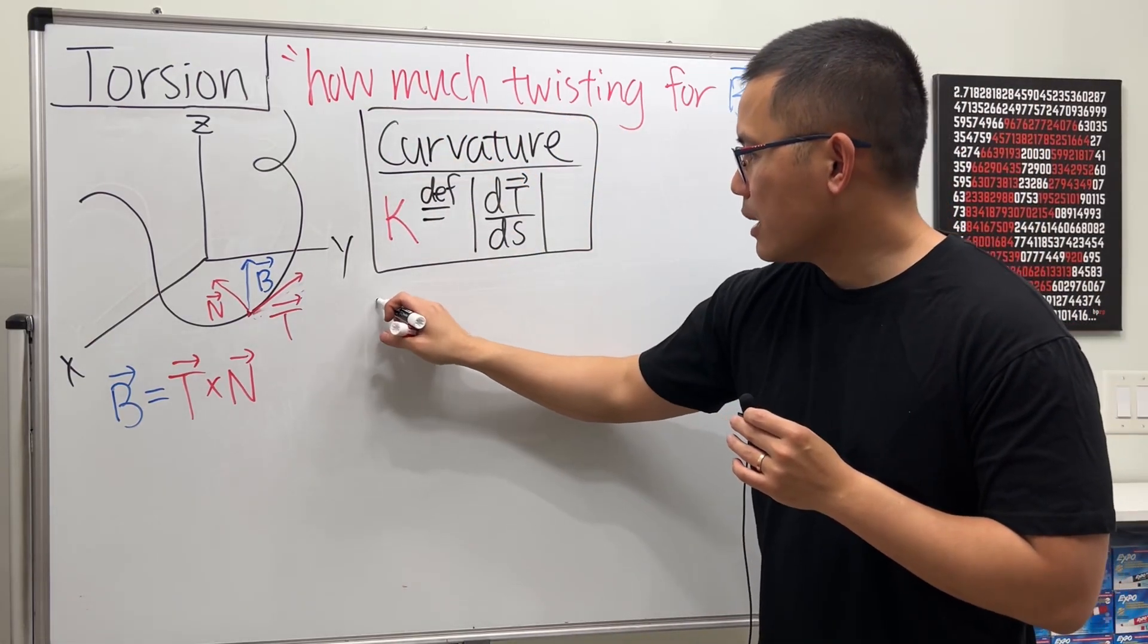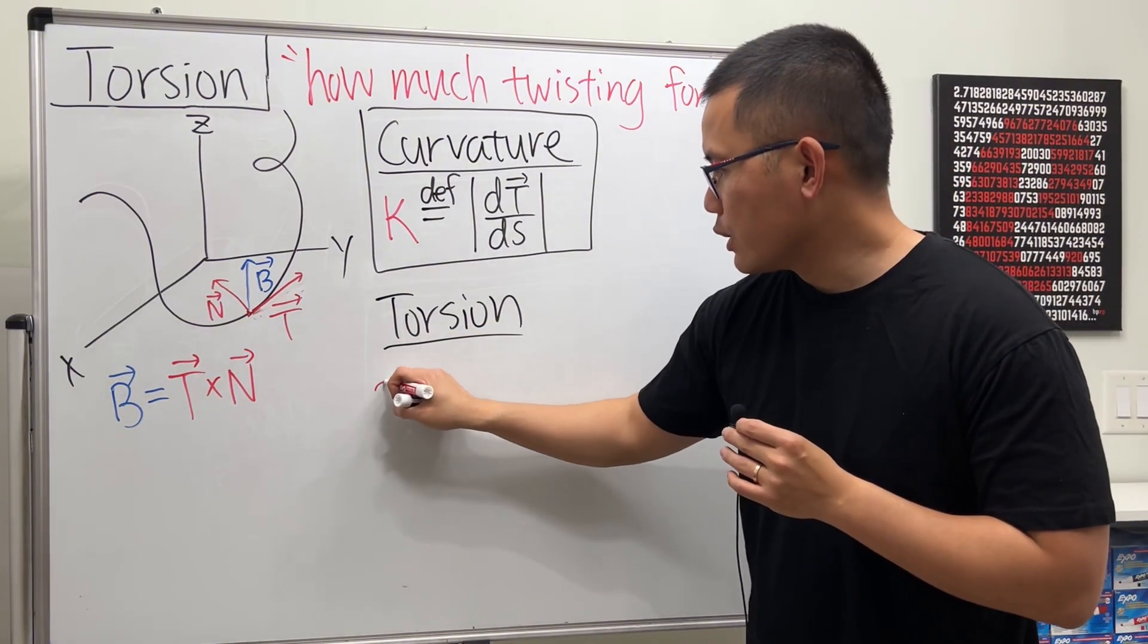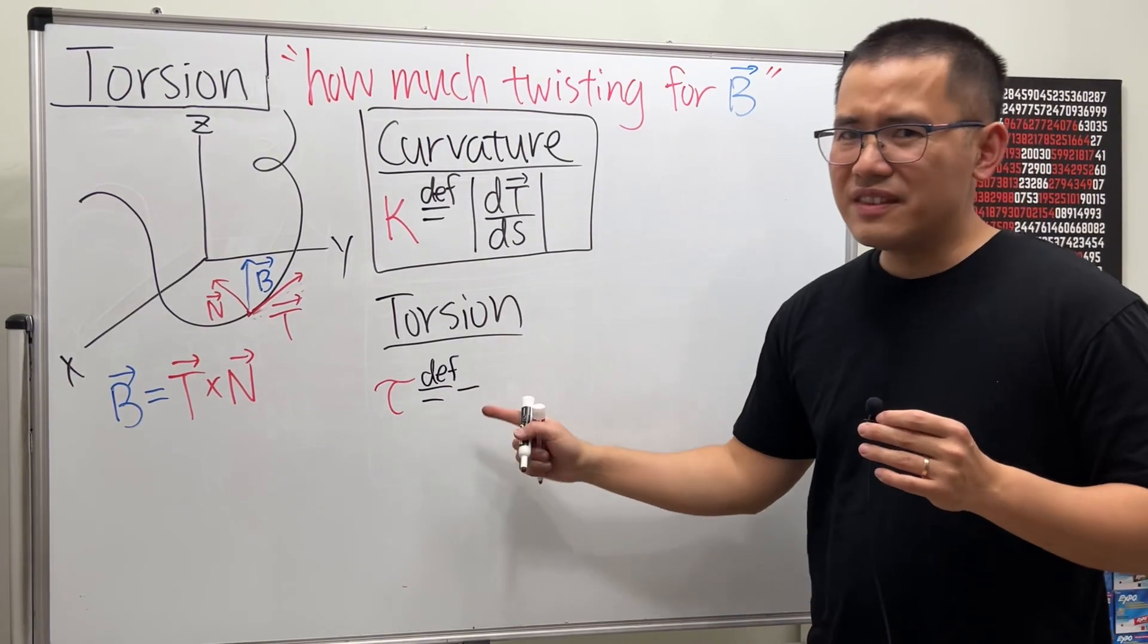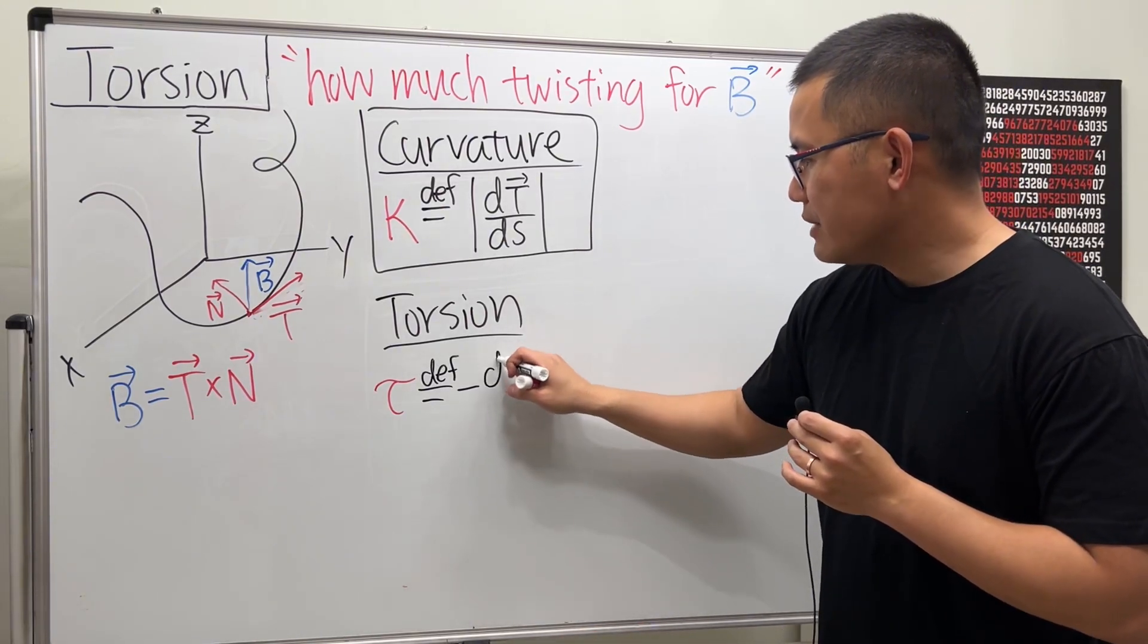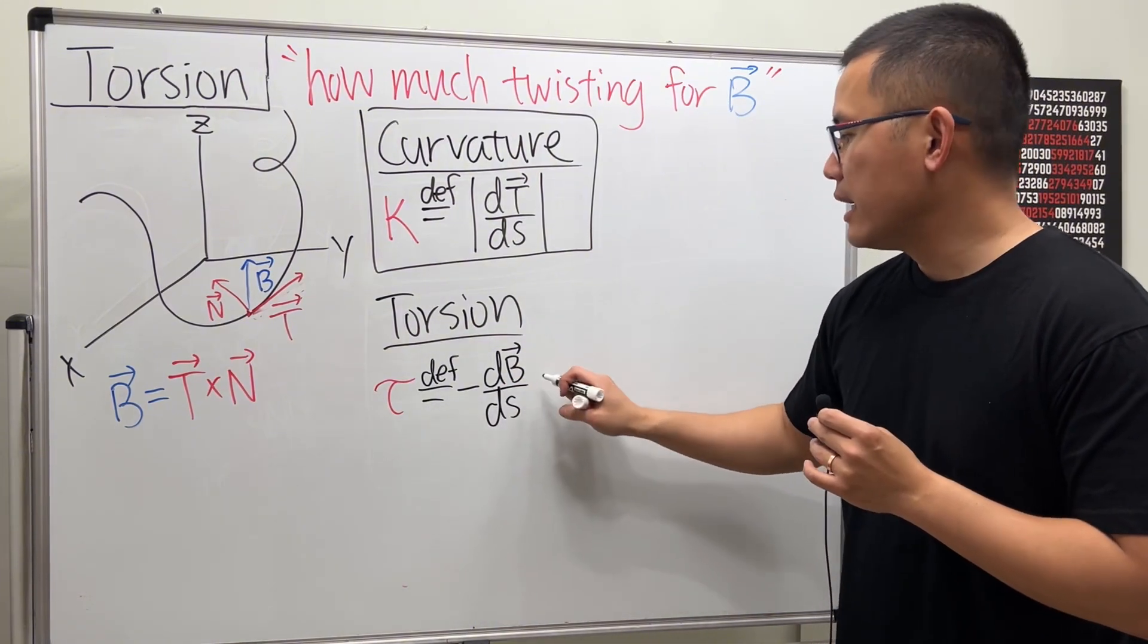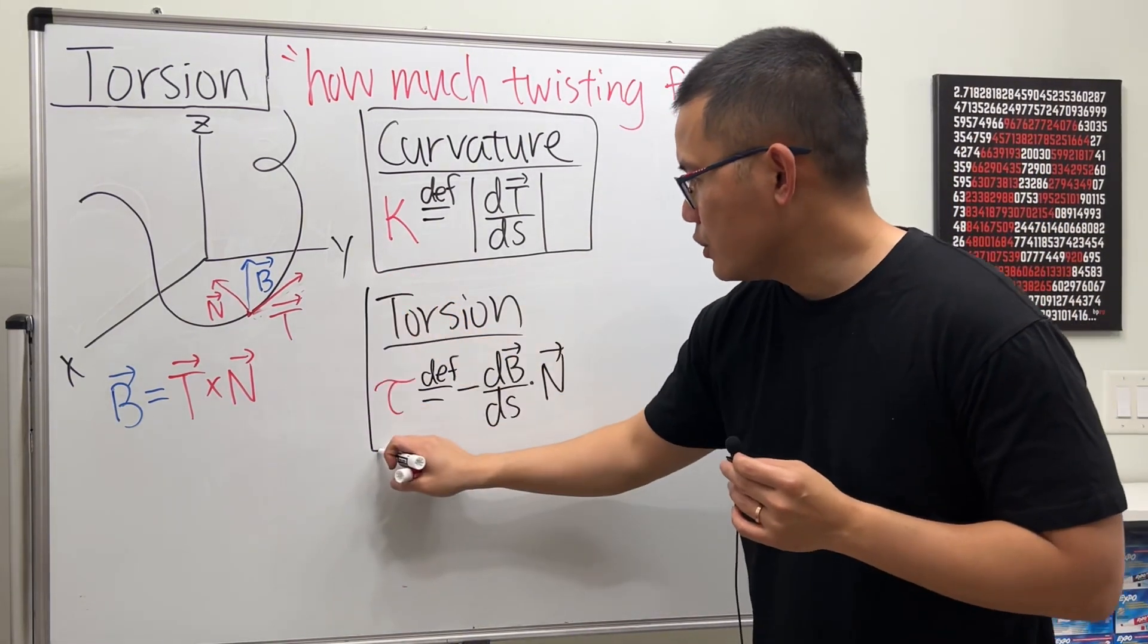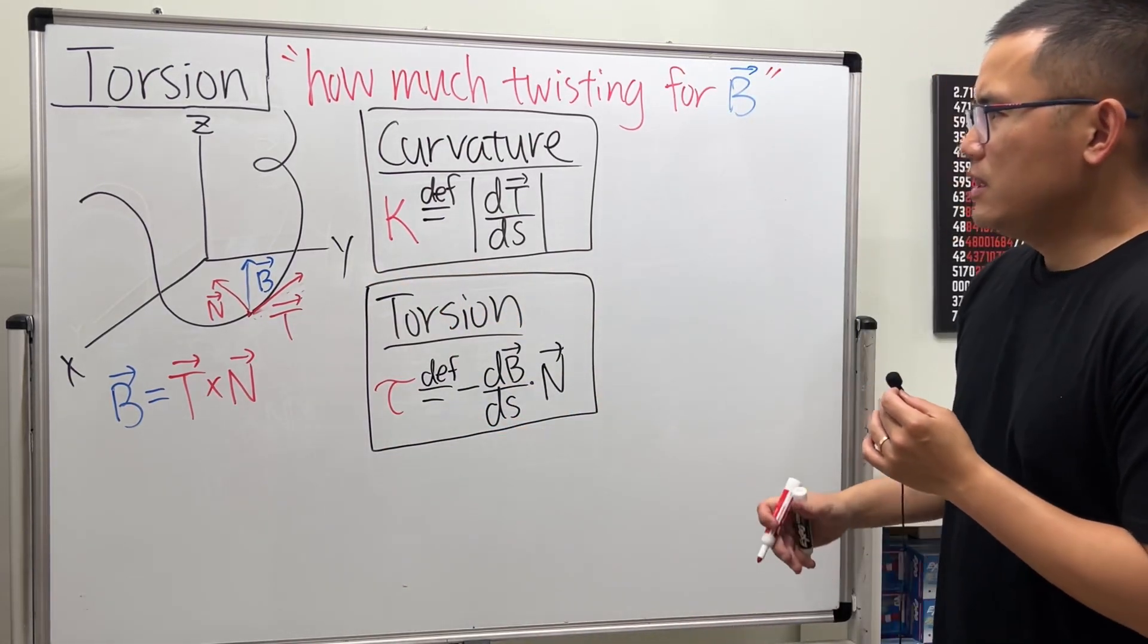Now we are talking about torsion. This right here, we are going to use the Greek letter τ. This is defined to be negative—and the negative is just tradition, right, and you are going to see why later on—and here we have the derivative of B with respect to s, and here we do the dot product with the unit normal vector. And that is the definition of the torsion.